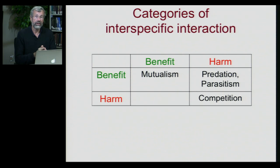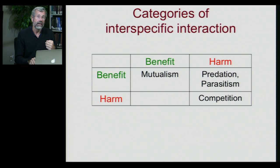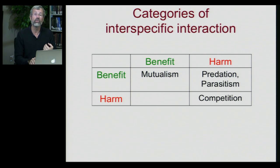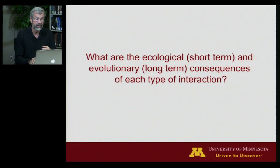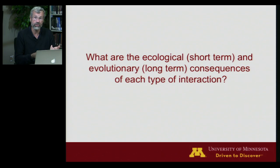There are many possible outcomes of interactions between different species, and we're going to focus on them according to the net result. Whether they have a net benefit to each other — that's mutualistic. Whether they have a net harm on both species — that's competition. Or if they're one-sided, where one species benefits at the expense of another, in the case of predation or parasitism. We'll be contrasting impacts in ecological time scale, which is short-term, versus evolutionary or long-term consequences of each of these different types of interaction.